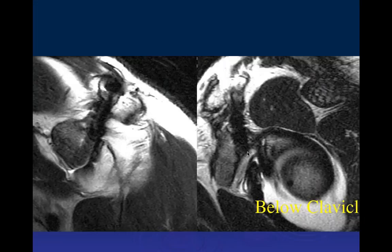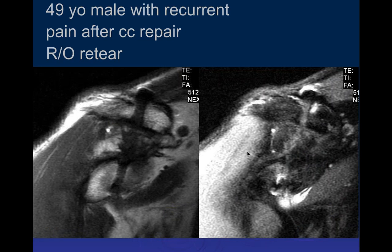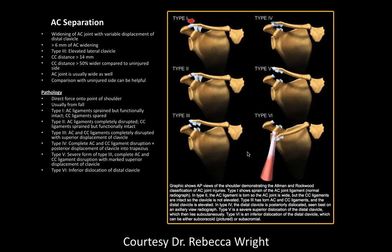In Type 6, the clavicle is inferiorly dislocated and often goes underneath the short head of the biceps, becoming entrapped inferior to the coracoid process. These require major force. No examples of Type 6 are available as they are virtually never seen clinically — these patients likely never make it to the emergency room.